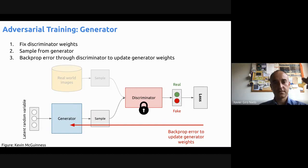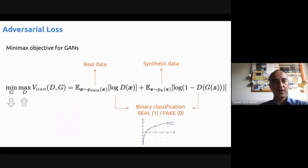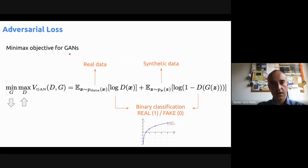If you look at the expression of this process, that's what's called the minimax objective for a GAN. I'll explain it to you — I think if you understand the idea, it's quite easy even if it might look a bit intimidating at first. We have a value function or loss function for GANs. There are two different goals: the generator will try to minimize this expression, and the discriminator will try to maximize it.